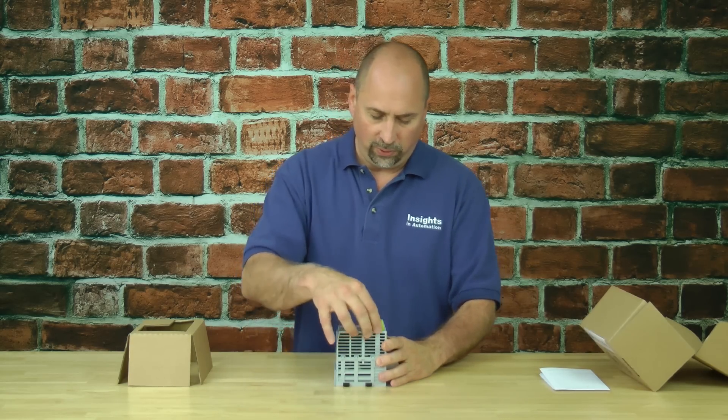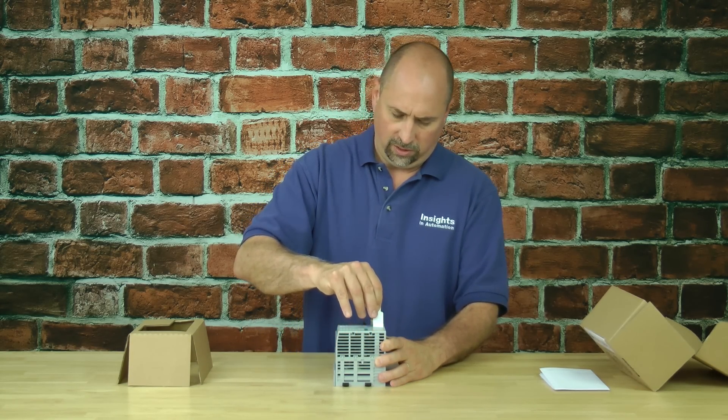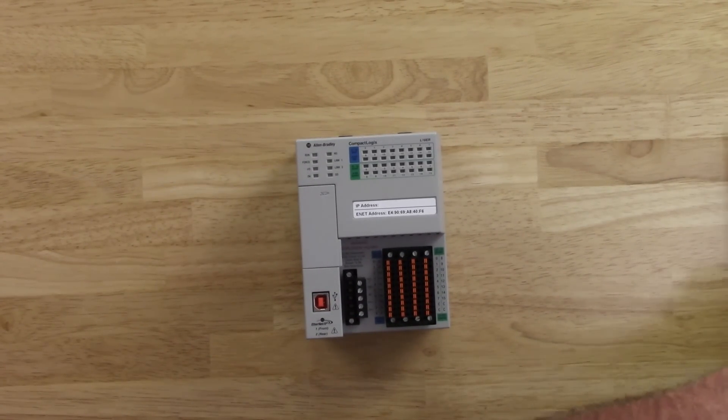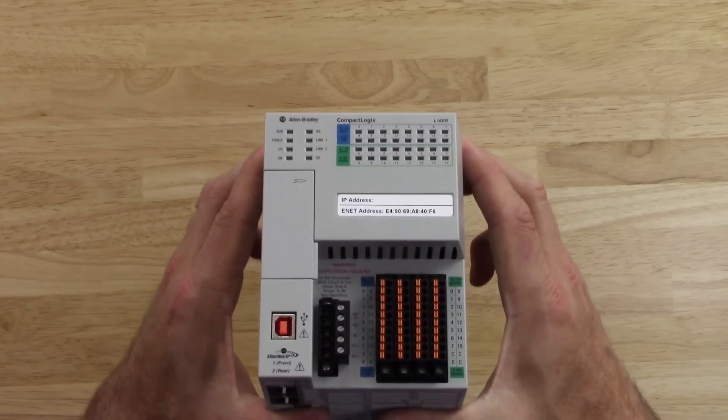So let's go ahead and pull this notice off here. We'll take that out and put that off to the side. And now we'll take a look at the front of our unit.